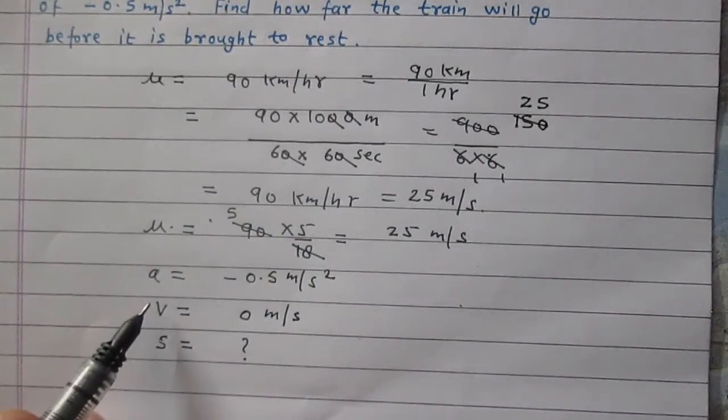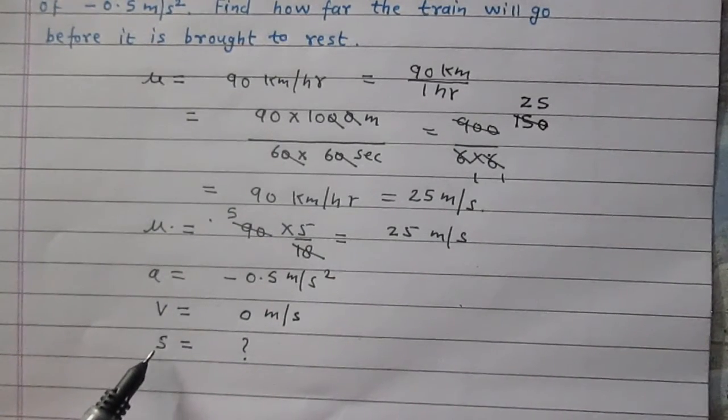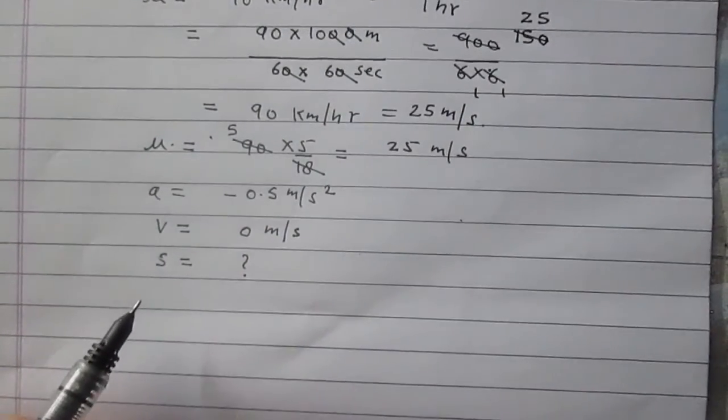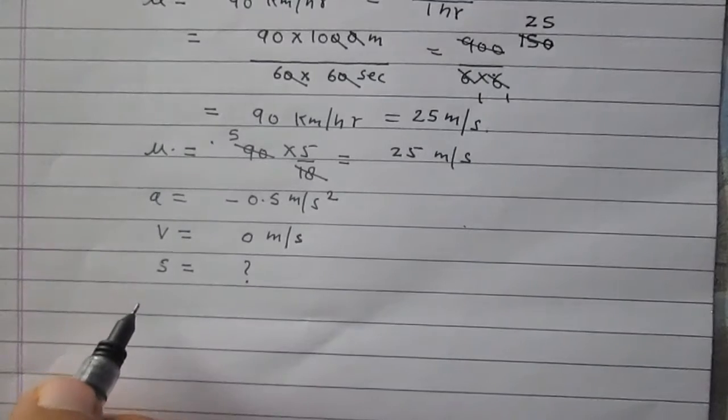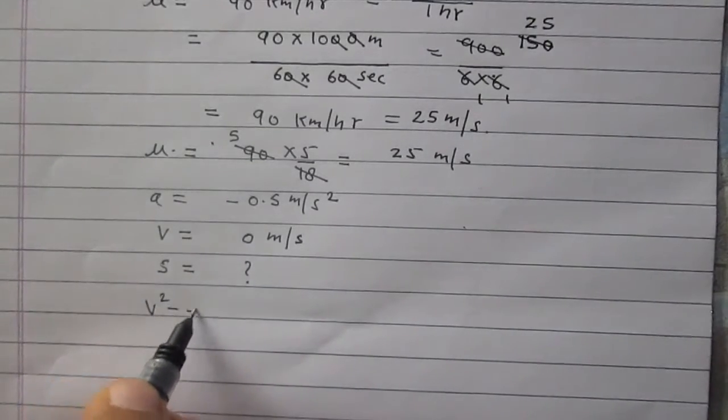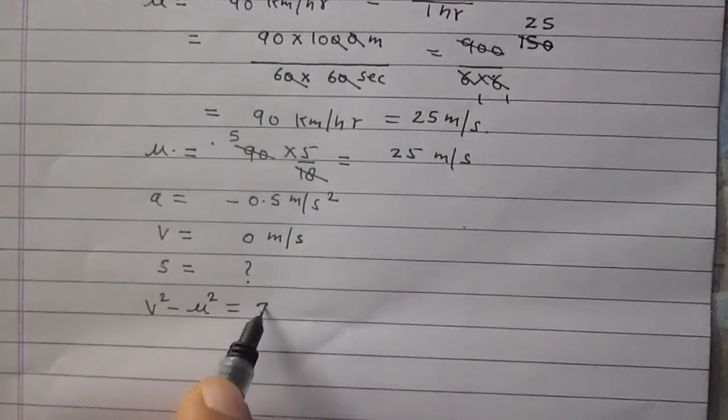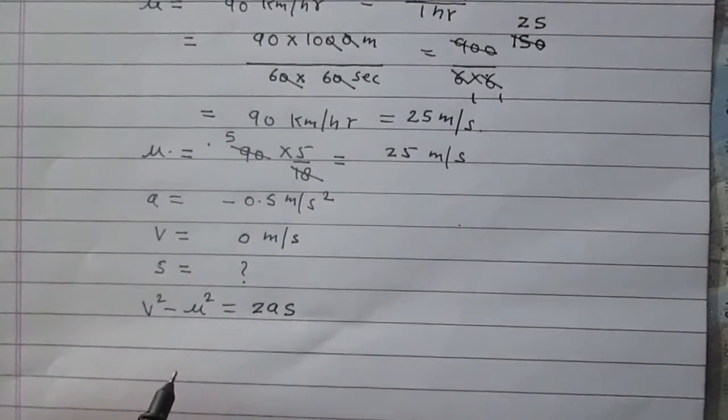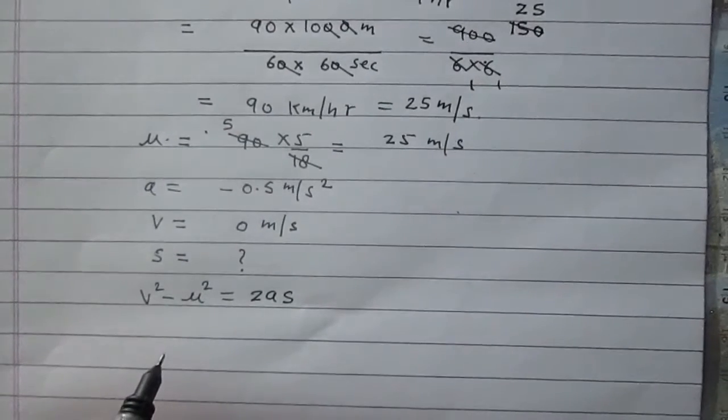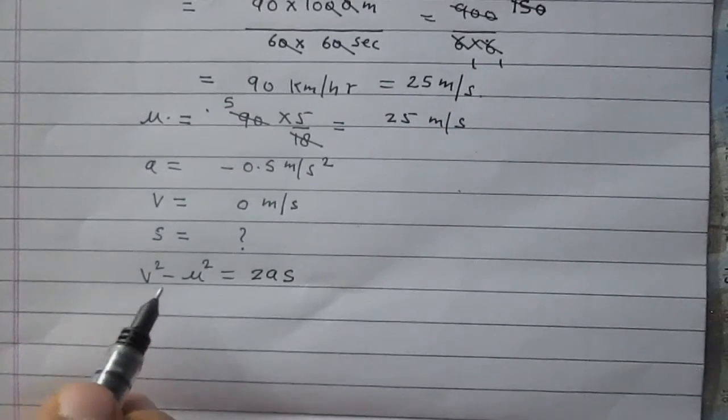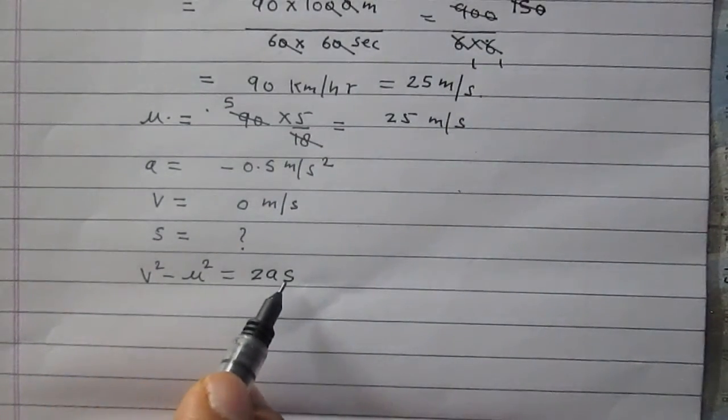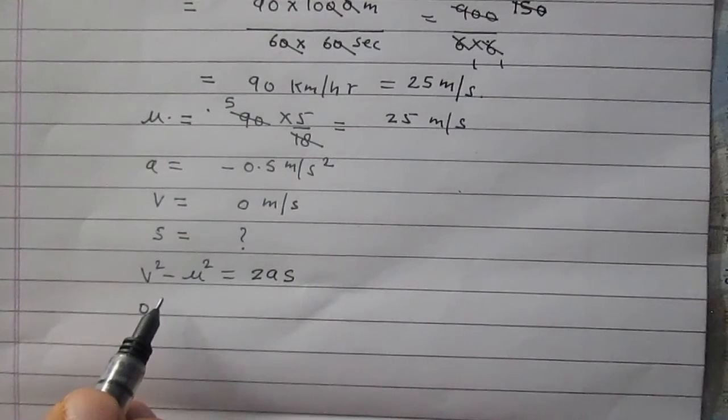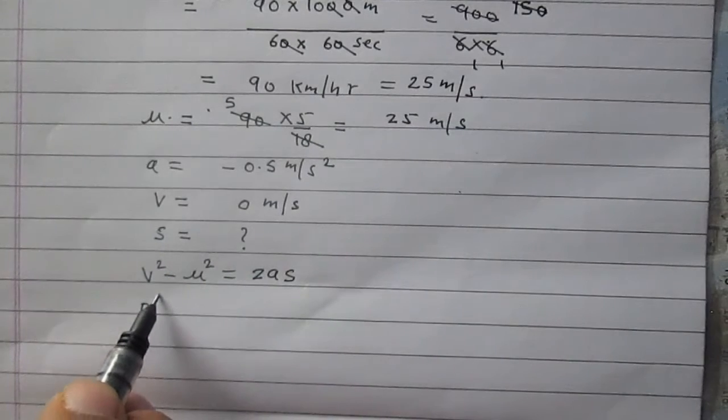So we have variables u, a, v, and s. We are to find s. With u, a, v, we will simply apply the equation v² - u² = 2as, one of the equations of Newton. So v² - u² = 2as.